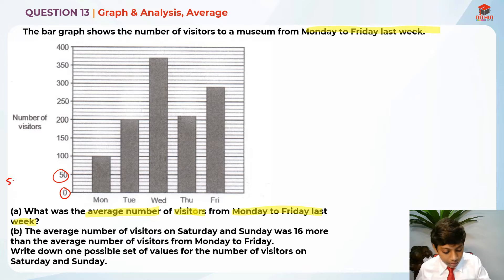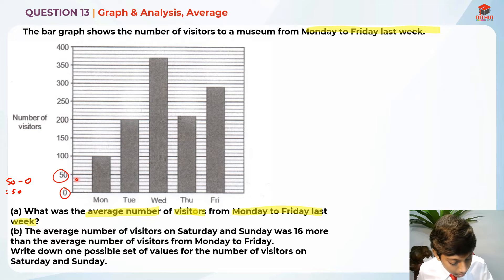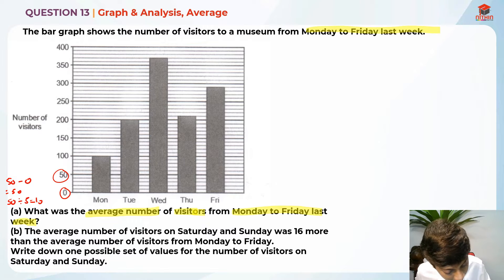So 50 minus 0 is equal to 50. After that, we have to take the difference divided by the number of gaps. There's 1 gap, 2 gaps, 3 gaps, 4 gaps, 5 gaps. So I'm going to take 50 divided by 5, which is 10. So each line is 10.